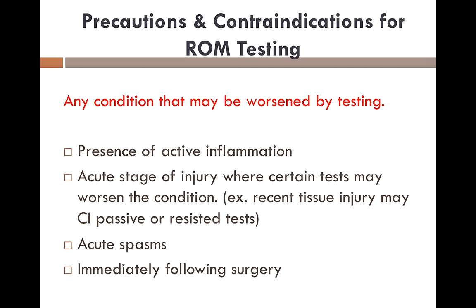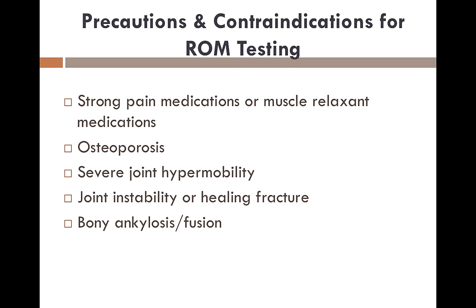Some precautions and contraindications for range of motion testing include: the presence of active inflammation, the acute stages of injury where certain tests may worsen the condition — for example, when recent tissue injury may contraindicate passive or resisted tests — acute spasms, immediately following any types of surgery, strong pain medications or muscle relaxant medications, osteoporosis, severe joint hypermobility, joint instability or a healing fracture, and bony ankylosis or fusion.